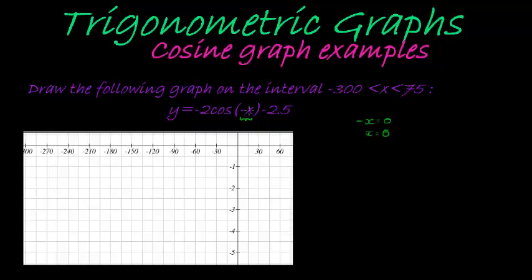When x = 0, we get cos(0) = 1. Then we get -2 times 1. We're trying to find the y-value when x = 0.